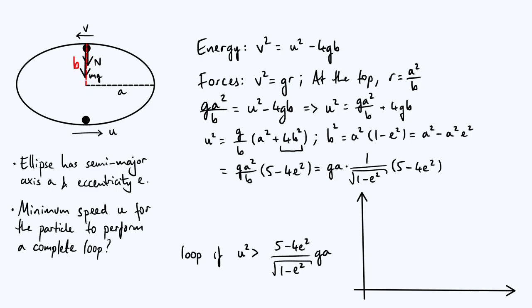To get insight into this result, let's sketch the right-hand side as a function of eccentricity. I'll plot eccentricity e on the x-axis and the dimensionless parameter u²/(ga) on the y-axis. When e = 0 we have a circle, and the expression gives u²/(ga) = 5, which is consistent with the result from the earlier video on circular loop-de-loops, since a is just the radius of the circle when e = 0.